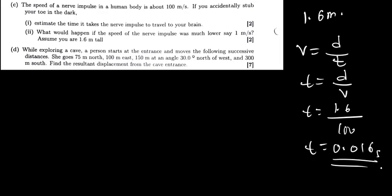That is part 1. But what would happen if the speed of the nerve impulse was much lower, let's say 1 meter? So let's see what will happen to time. If the distance is the same but the speed is now 1 meter, the time will be 1.6 seconds.